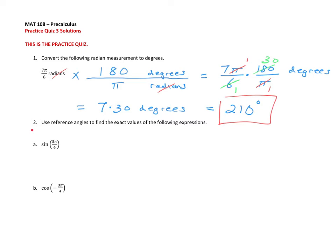For question 2, we want to use reference angles to find exact values. In part A, we want sine of 5π/6. I'll draw a unit circle as a guide. Half a rotation is π, which is the same as 6π/6. Going backwards by π/6 gives us 5π/6. The reference angle is the acute angle made by the terminal side and the x-axis, which is π/6.